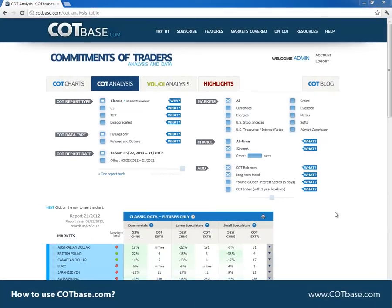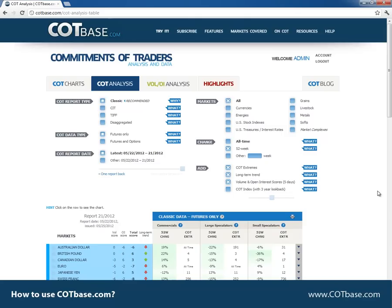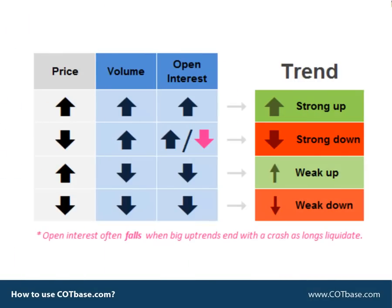Volume and open interest is the next function. It's a wonderful supplemental tool to COT analysis. If prices go up and the volume and open interest is above average, then we can talk about a strong volume and open interest confirmation. The opposite is also true: if prices fall and it is accompanied by a large volume and open interest, then we can state that the price decline was confirmed. Of course, if prices move in a direction but the volume and open interest are below average, then we can say that the price movement was not confirmed.